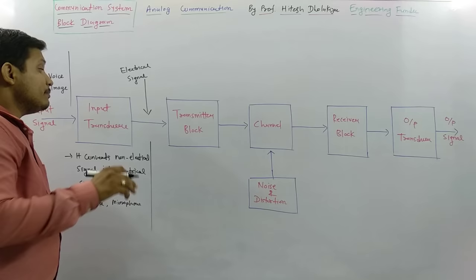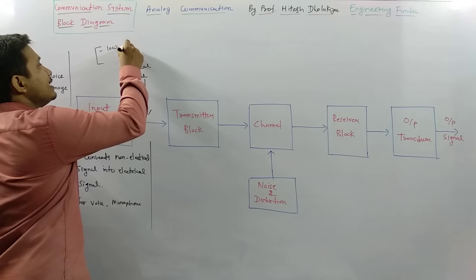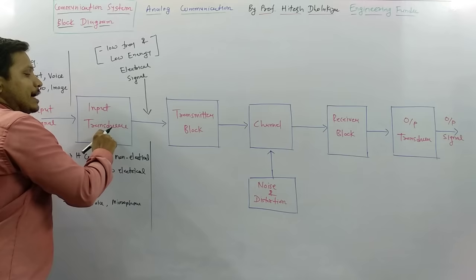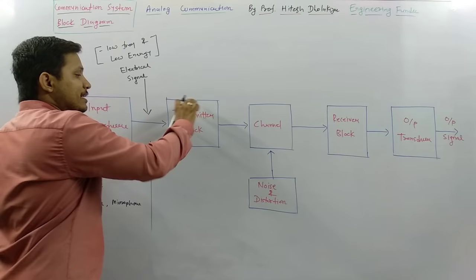Now whatever electrical signal is available at the output of the input transducer, that will be a low frequency signal as well as a low power signal. So this electrical signal has the characteristics of low frequency and low energy.